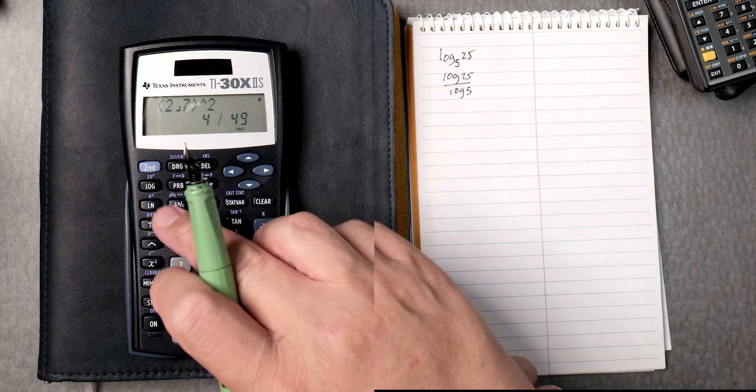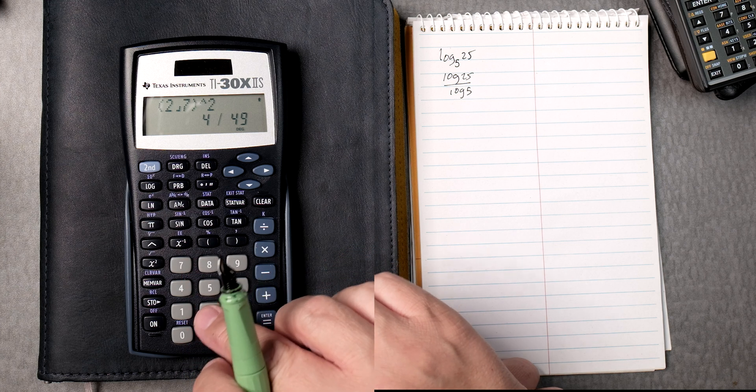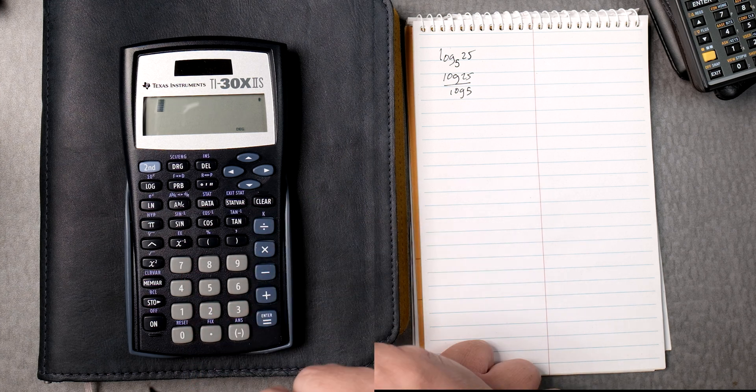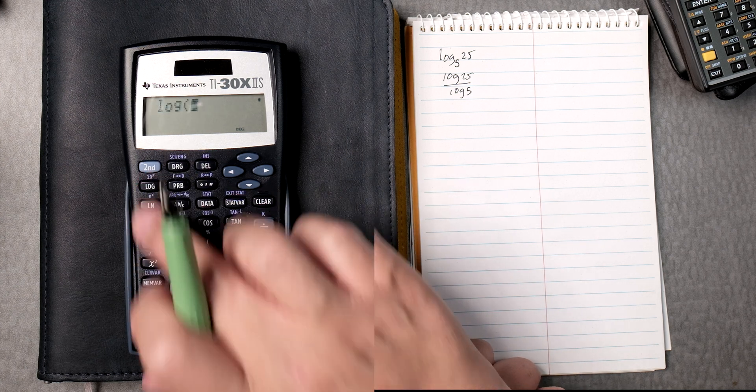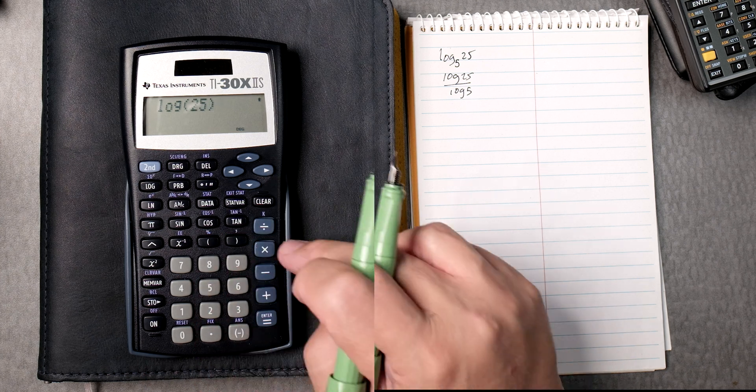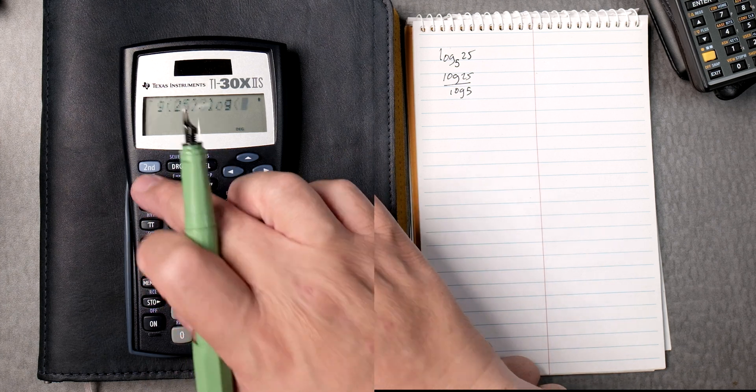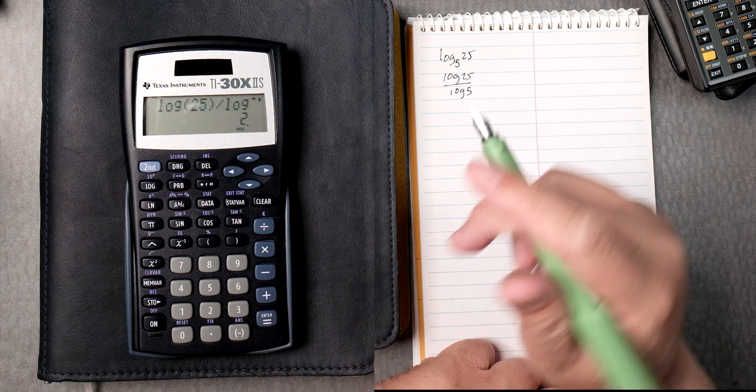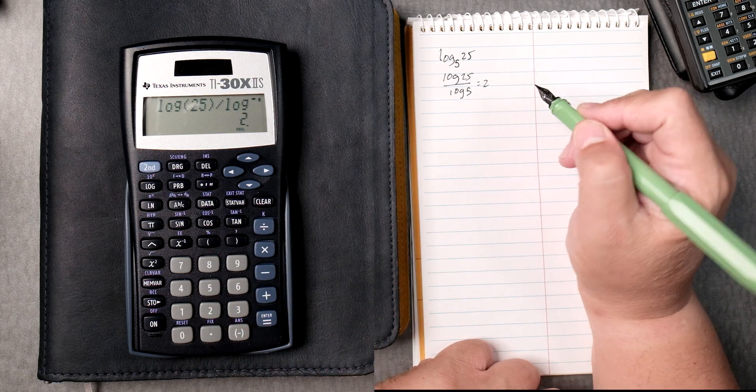So we're going to press clear here, and we'll press log, 25. We're going to close it, divide it by log, 5. We're going to close it, and then equals gives you 2. Very straightforward.